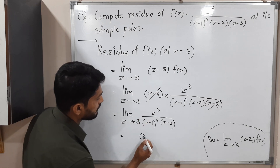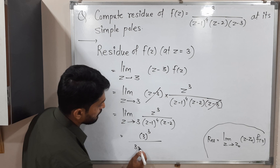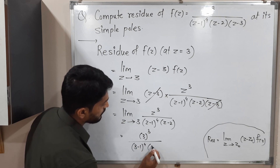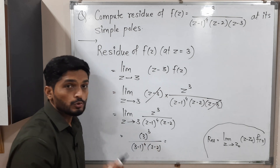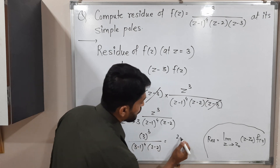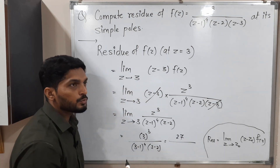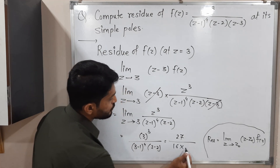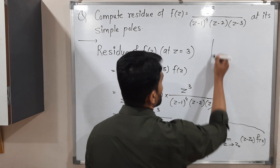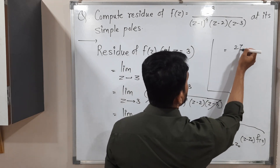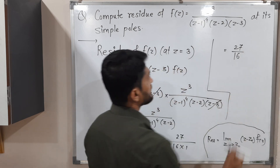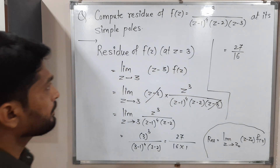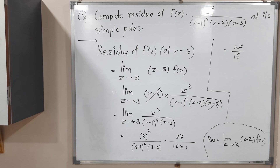So we get 3 cube upon 3 minus 1 raise to 4 times 3 minus 2. That is 27 upon 2 raise to 4, which is 16, times 1. So the answer is 27 upon 16. That's it — this is the required residue. So in this way we found out the residue of f at both simple poles, z equal to 2 and z equal to 3. Thank you, see you in the next video.